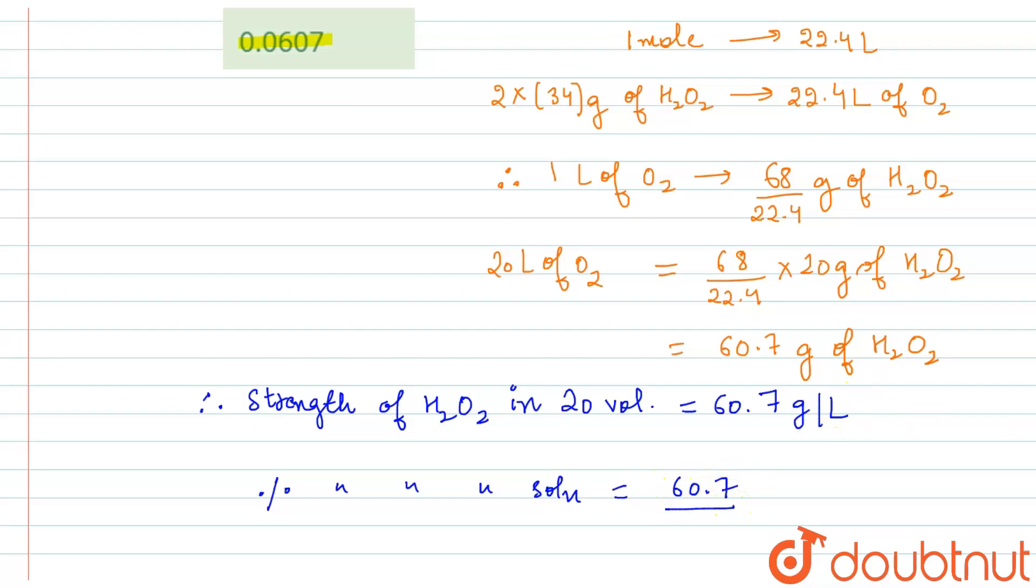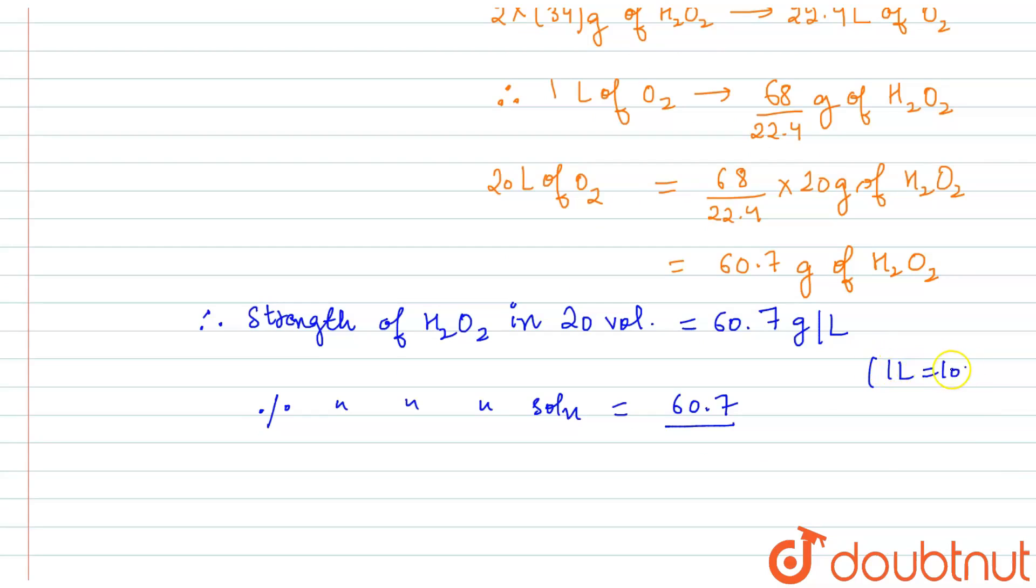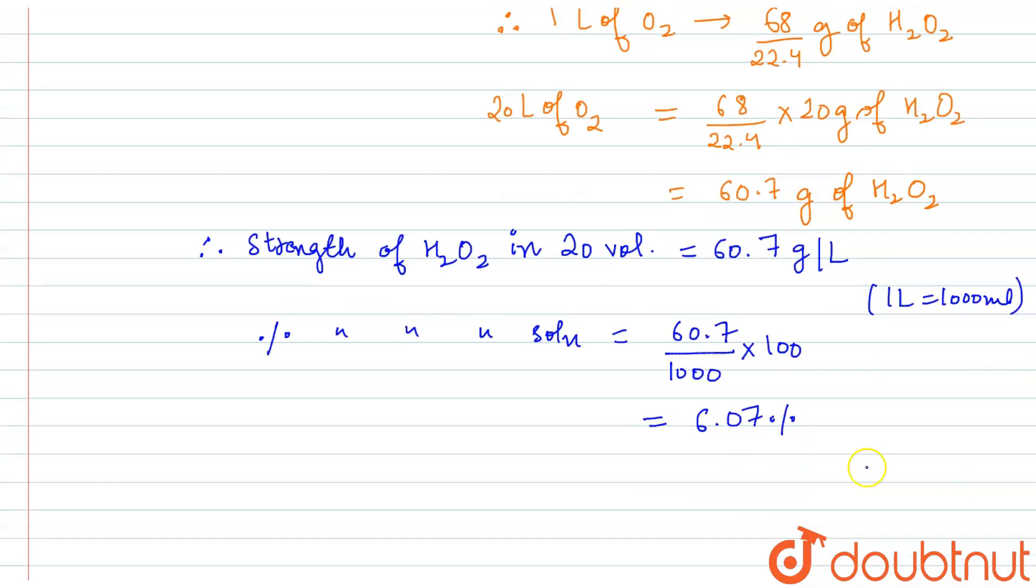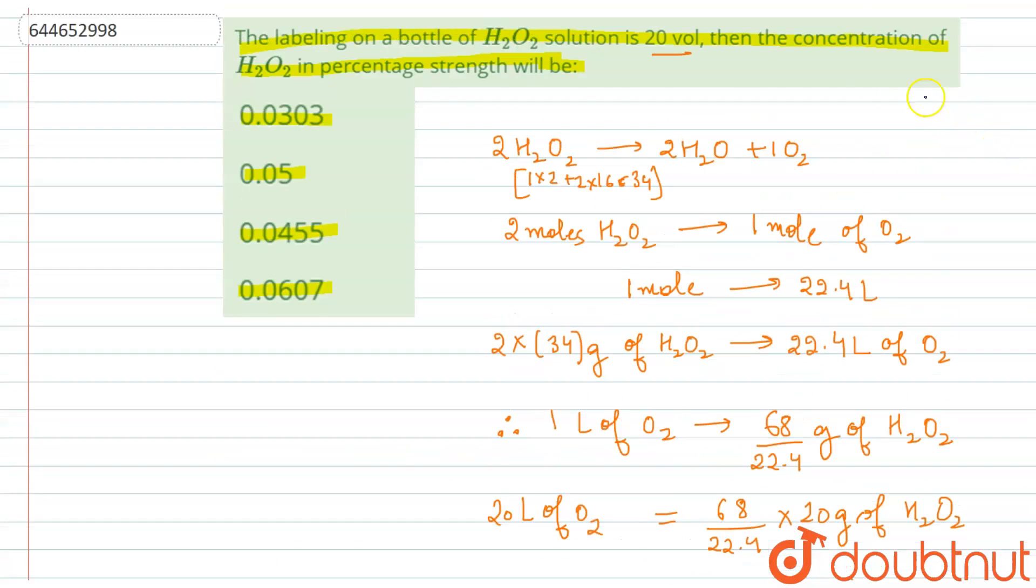So to convert liters into ml, we know 1 liter is equal to 1000 ml. So we will divide it by 1000 into 100 for the percentage. So this will be 6.07%, and to eliminate this percent, we will write this as 6.07 divided by 100, which comes out to be 0.0607, which is the percentage strength asked here in the question. So the correct option is the fourth option.